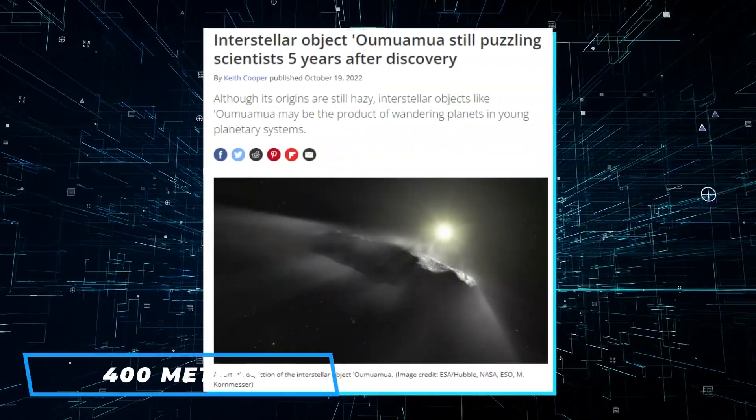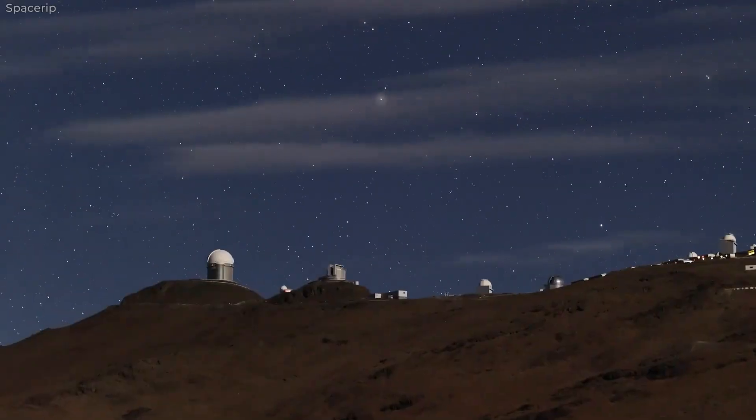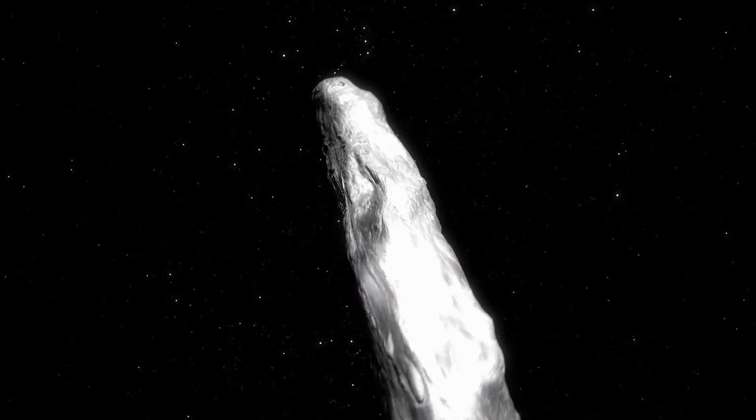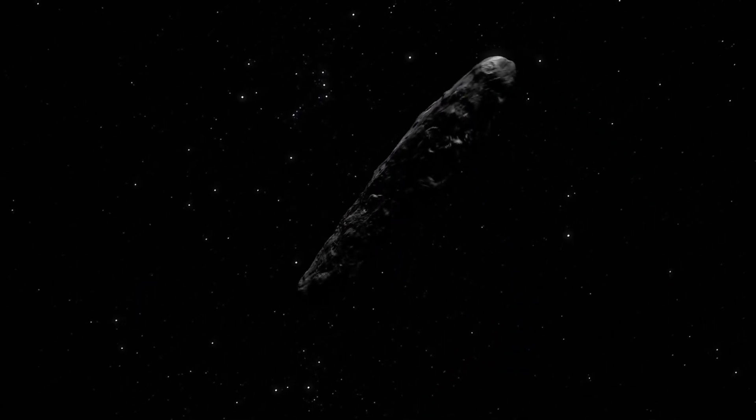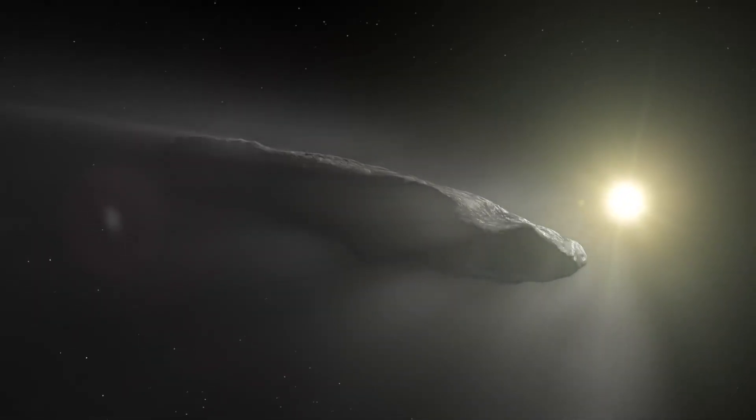The 400 meter long object was first detected on October 19, 2017, by astronomers using the PanSTARRS one telescope in Hawaii. Fittingly, this interstellar object was given the name Oumuamua, or a messenger from afar arriving first. Quite poetic, you ask me.